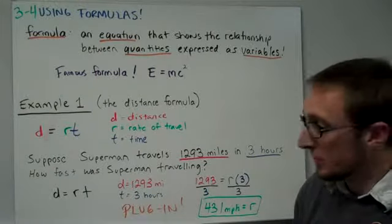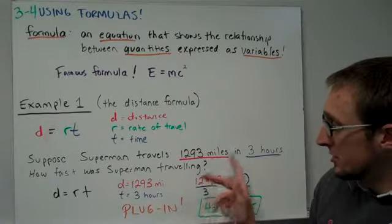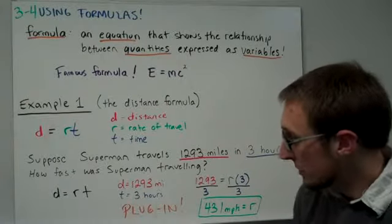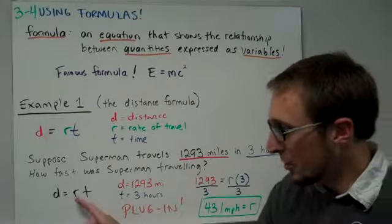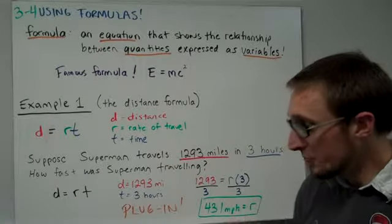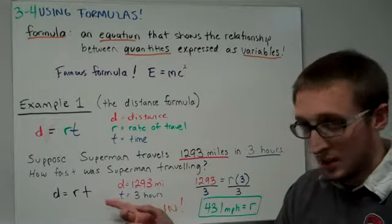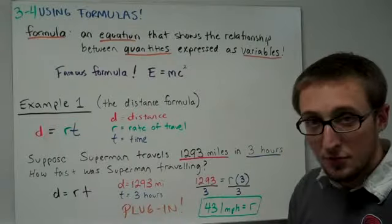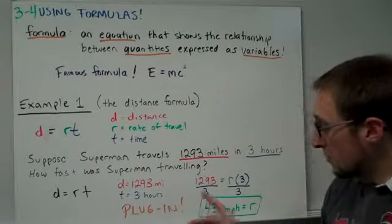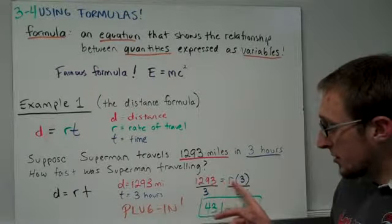Well, the distance is 1,293 miles, the time is three hours. The only thing we don't know is the R. So let's plug in what we do know for D and T, distance and time, and see if we can figure out what R is. So 1,293 distance is equal to the rate, R, times three.